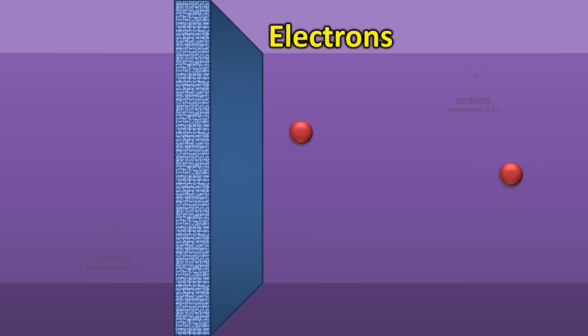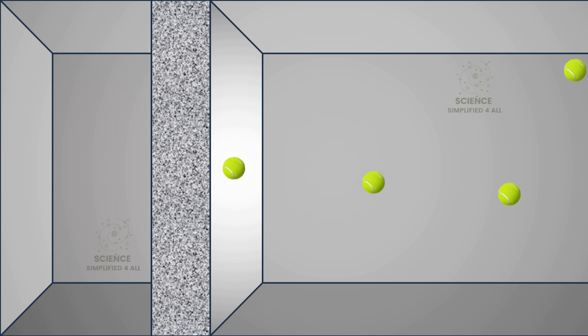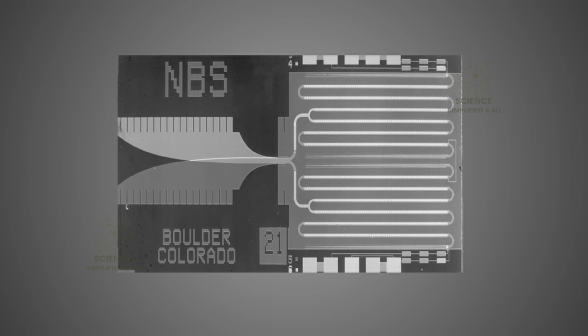Until now, we thought such weird effects existed only at the subatomic level, among electrons and protons. But not anymore. These three scientists have brought this weird quantum behavior into the macroscopic world. Not to a tennis ball, but to something about the size that you could actually hold in your hands.